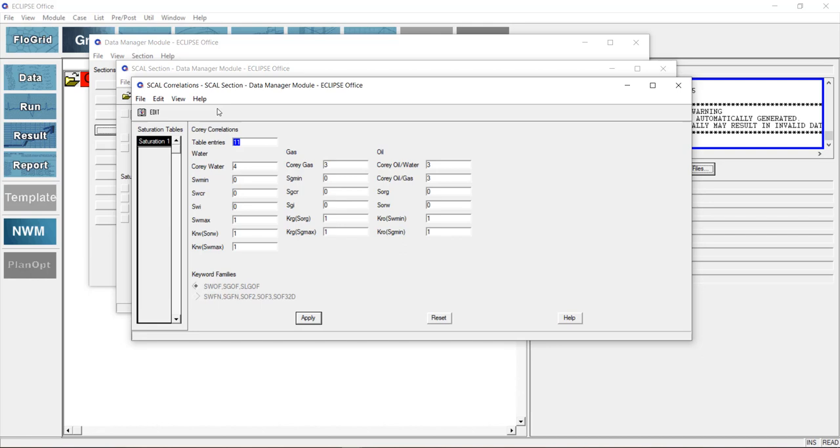The endpoints include initial water saturation in the reservoir, the maximum relative permeability of water, the relative permeability of oil and the residual saturation of oil. Then we also have what we call the Corey functions, which are basically used to control how much fluid flows in the rock.